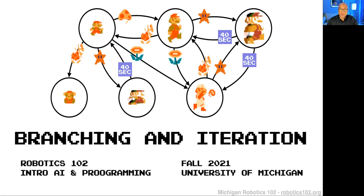Hello. Welcome to Robotics 102, Introduction to AI and Programming. I am Professor Chad Jenkins. Welcome to my next lecture, which is going to be about branching and iteration. This is really about getting us up to speed on C++, so we can write programs and make robots do things. As coming up, we're going to have a robot do wall following, and we need to get up our C++ literacy to do this.